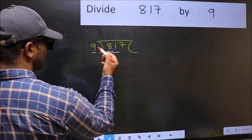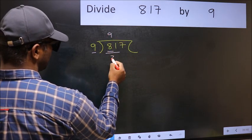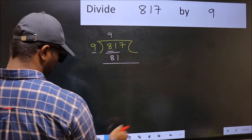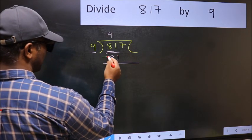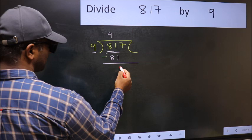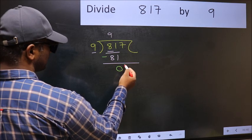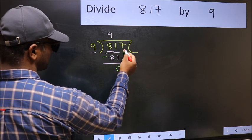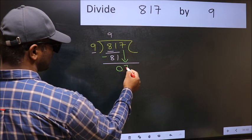When do we get 81 in 9 table? 9 times 9 is 81. Now you should subtract. 81 minus 81, 0. After this, bring down the beside number. So, 7 down.